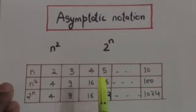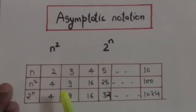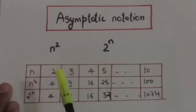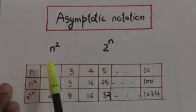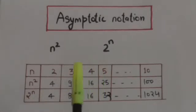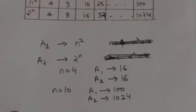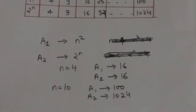So we can see that the growth of the function 2 raised to power n is more than the growth of the function n². As the value of n increases, the value of 2 raised to power n increases faster than the value of n².